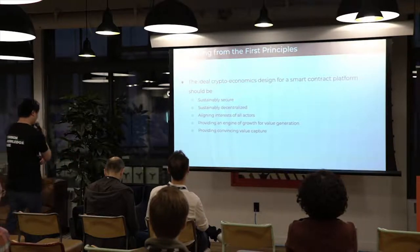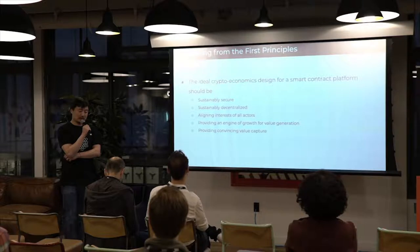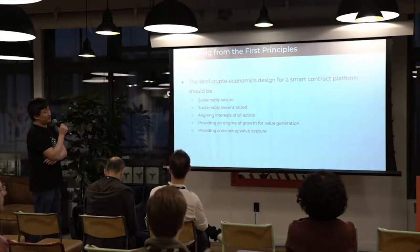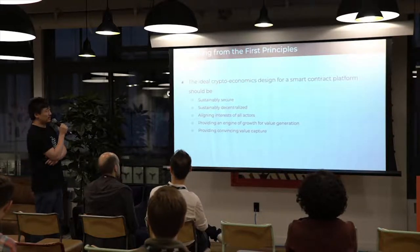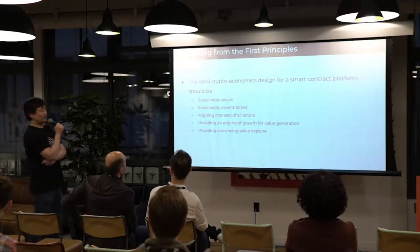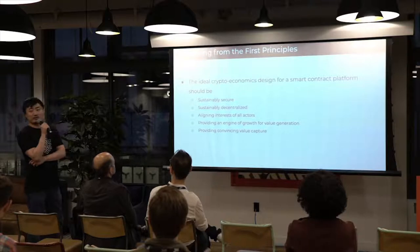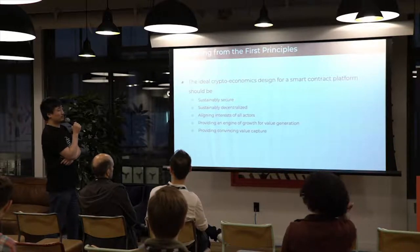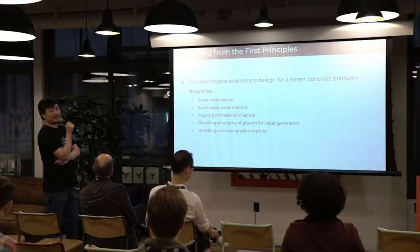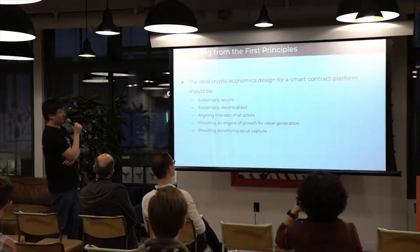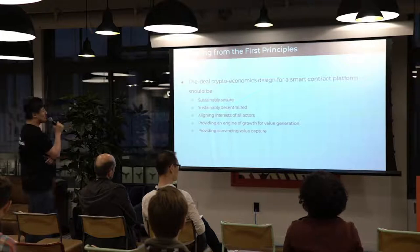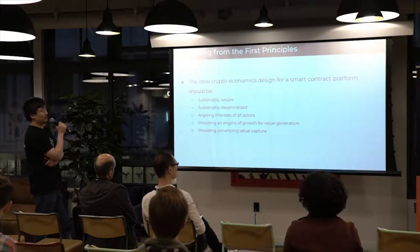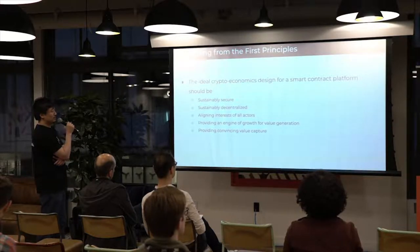We started designing this economic model starting last September/October and it took us about three months to finally come up with what we have today. In the beginning it felt very open — there are a lot of directions you can go. It's not very useful to dive into the specifics immediately, but to step back and think about what an ideal crypto-economics model design for a smart contract platform should be — start from the design goals.